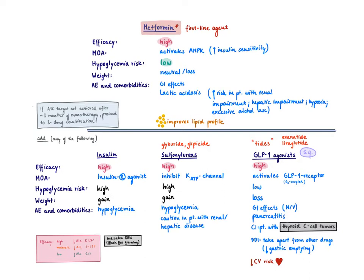Another drug we can always consider is insulin, which has probably the highest efficacy as it's open-ended depending on how much you give. Insulin acts at the insulin receptor, a tyrosine kinase receptor. The hypoglycemia risk is very high, which should make sense - if you give a patient extra insulin, it will lower blood glucose levels. Therefore, there's a very high risk of developing hypoglycemia. Insulin is a fat-storing hormone, so it can lead to weight gain.